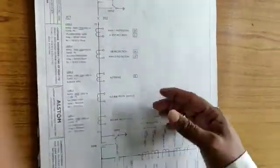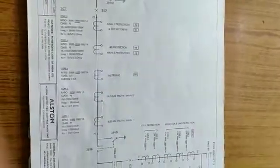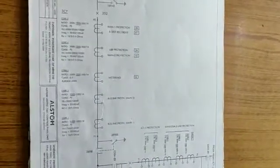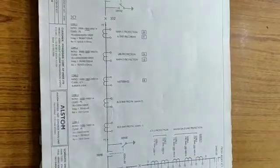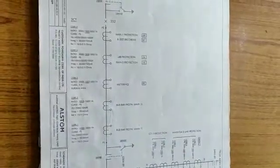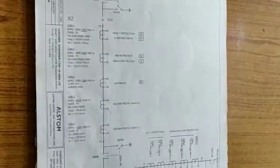In the next sheet, the CT different cores are mentioned in the scheme drawing. For example, CT number 3 has 5 cores — core 1, 2, 3, 4, and 5. This is the standard designation in Power Grid: the first two cores (core 1 and core 2) are always used for bus bar protection, core 3 is used for metering, and cores 4 and 5 are used for main 1 and main 2 protection respectively.